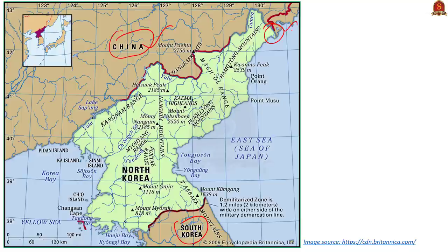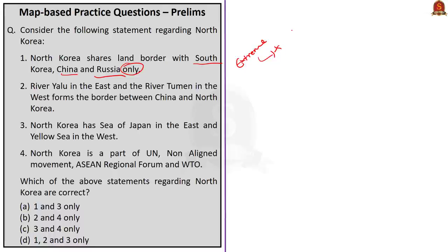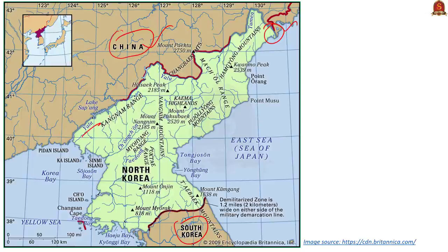Moving on to the second statement: river Yalu in the east and river Tumen in the west forms the border between China and North Korea. Looking at the map, here is river Yalu and here is river Tumen. These both rivers do form the boundary between China and North Korea, but river Yalu forms the boundary in the west, and river Tumen forms the boundary in the east. So this statement is wrong.